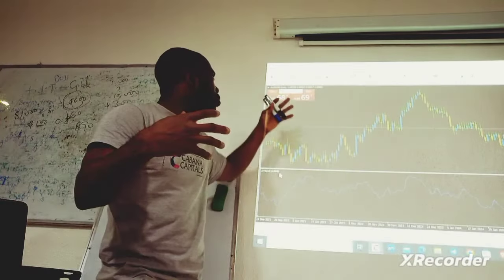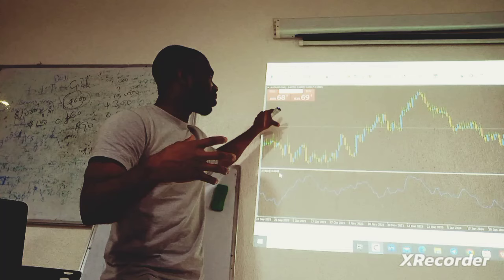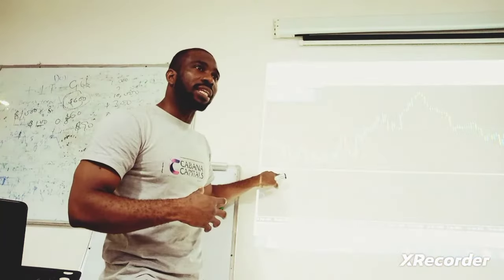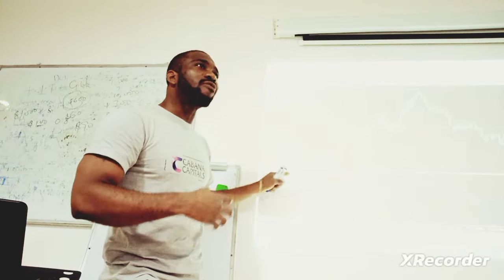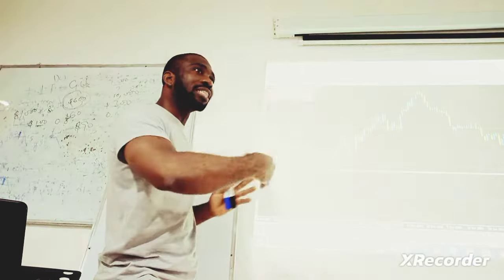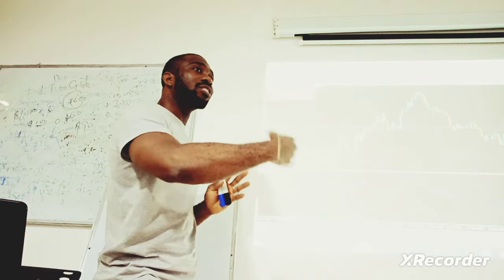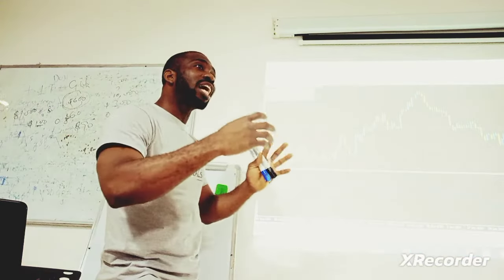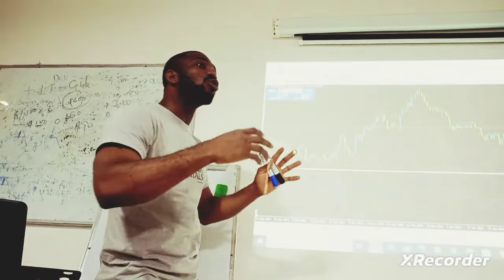Now we are viewing the daily time frame of AUD/USD and the Average True Range value is 41. What that means is that for the past 14 days, since we are on the daily time frame, for the past 14 days, the average number of pips AUD has been able to deliver is 41.